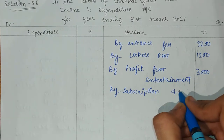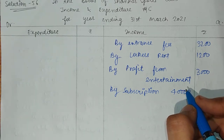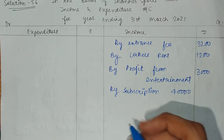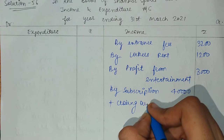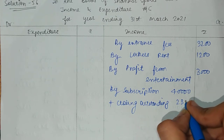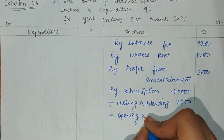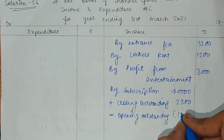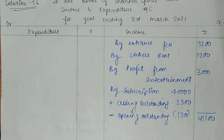The subscription amount received is $40,000. But from the additional information, the opening outstanding was $1,200 and closing outstanding is $2,300. So what do we do? Add the closing outstanding of the current year, and deduct the opening outstanding which is the previous year. If it was outstanding at the beginning of the year, it can't be outstanding now. So $41,000 is your subscription amount for the income and expenditure account.